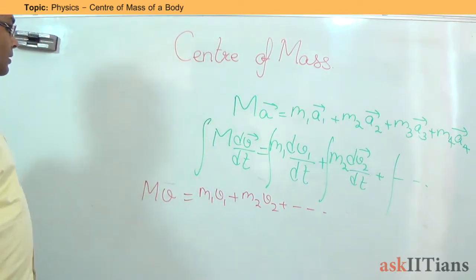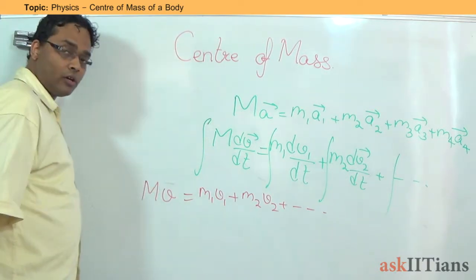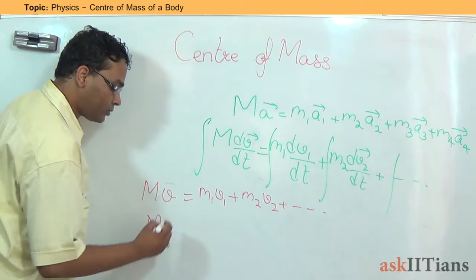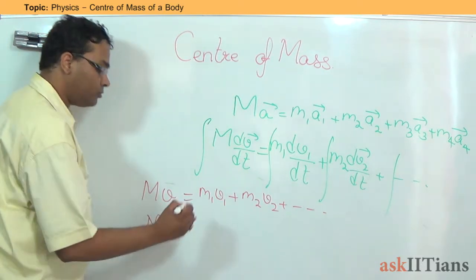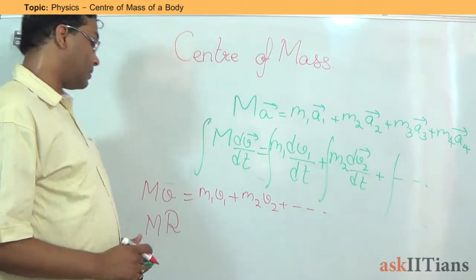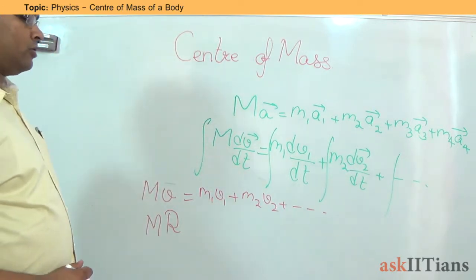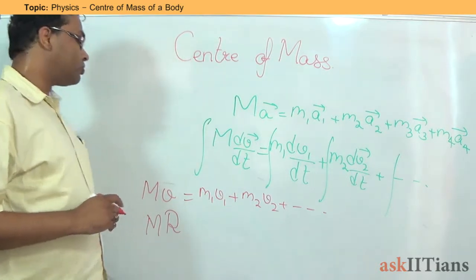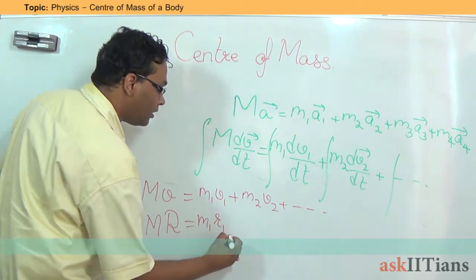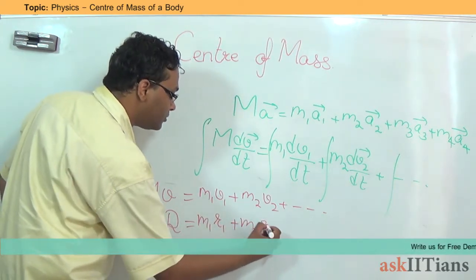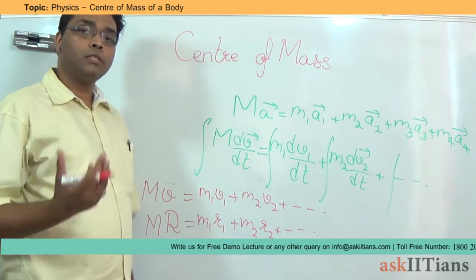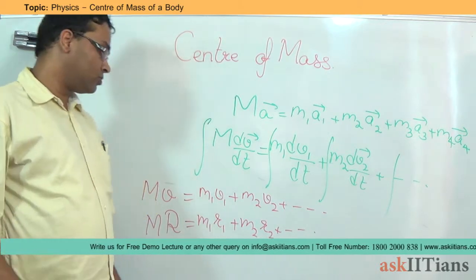Again doing the same way, assuming that there was no initial velocity of the object, integrating over time and so on, I can say that the total mass into the position of the center of mass, where the total mass can be said to be concentrated upon if I represent that by R. Obviously with regard to our origin that we have taken. So M into R, this will be equals to m1 r1, m2 r2, and so on. So remember r1, r2, r3, these were the position vectors of the different masses.